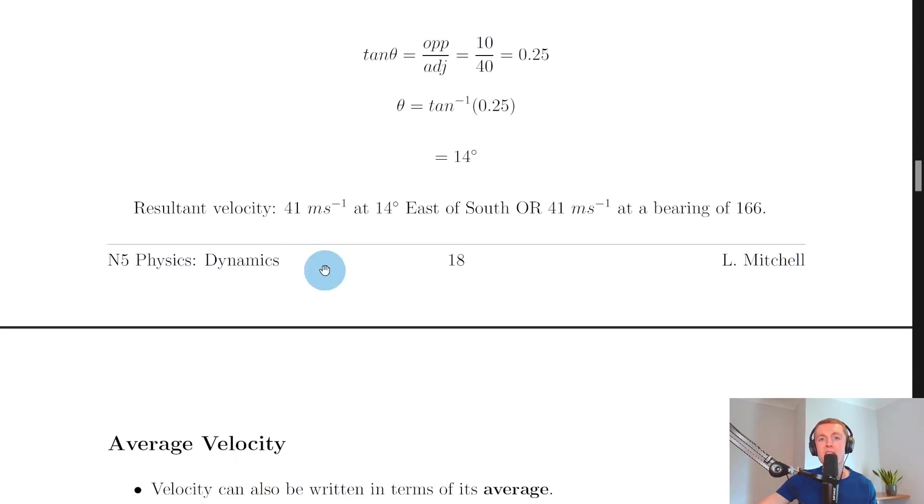So that means I can write my final answer as 41 meters per second at 14 degrees east of south or 41 meters per second at a bearing of 166 and you can choose which of those you write down.